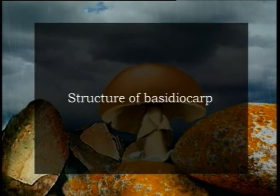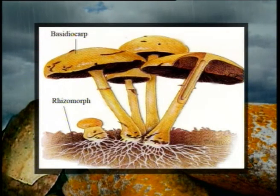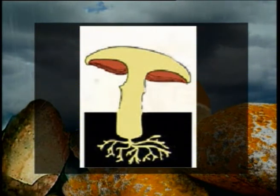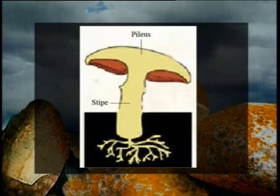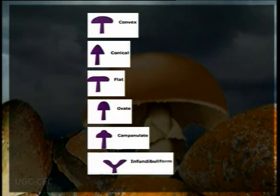In Agaricus the underground rhizomorph gives rise to the aerial fruiting body known as the sporocarp or basidiocarp. The mature fruiting body is an umbrella-shaped structure distinguishable into two parts: a broad cap called the pileus and a long massive stem known as the stipe. The pileus occupies the distal end of the stipe and varies in shape depending on the species and stage of growth. It can be convex, conical, flat, wavy, campanulate (bell-shaped), or infundibuliform (funnel-shaped), usually three to ten centimeters in diameter.